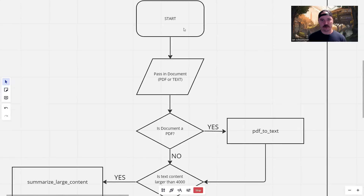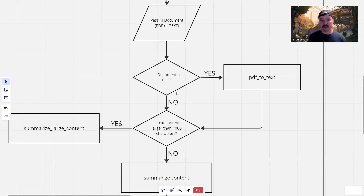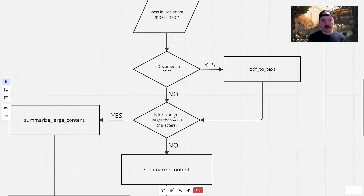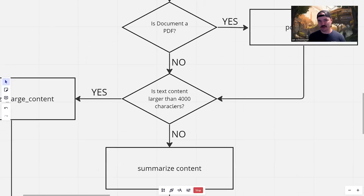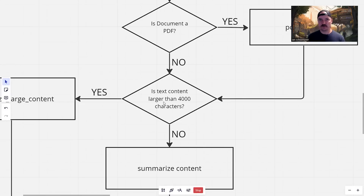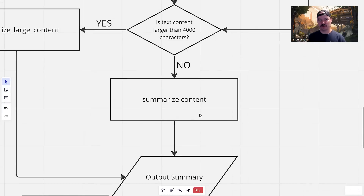At the start of the function, we pass in a document — either PDF or text — and based on whether it's a PDF, we either go straight to the next step or branch off to convert the PDF to text. Ultimately, we check the size of the characters in the text: if it's 4,000 characters or less, we pass it to the summarization function, which calls the API, gets the summary, and outputs it to the console.